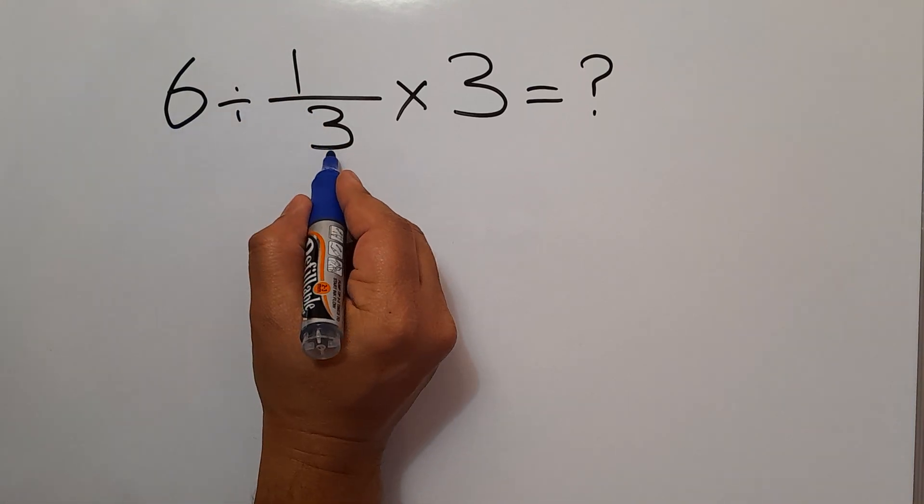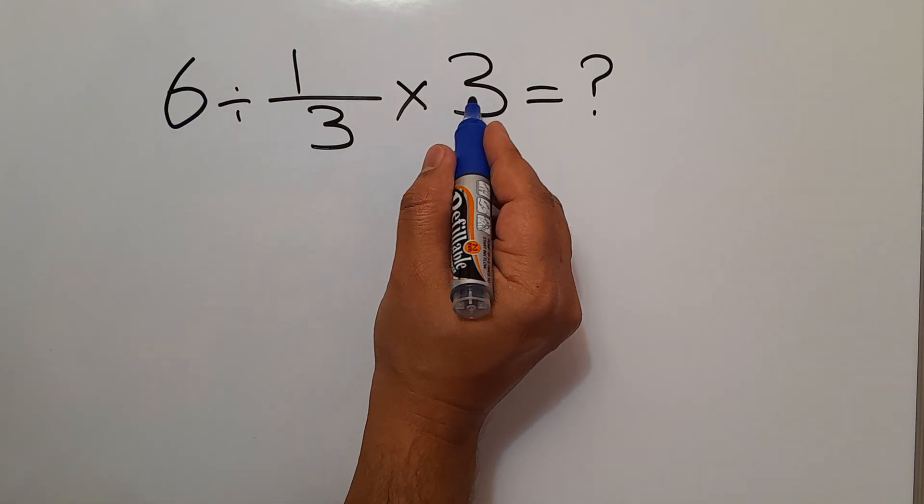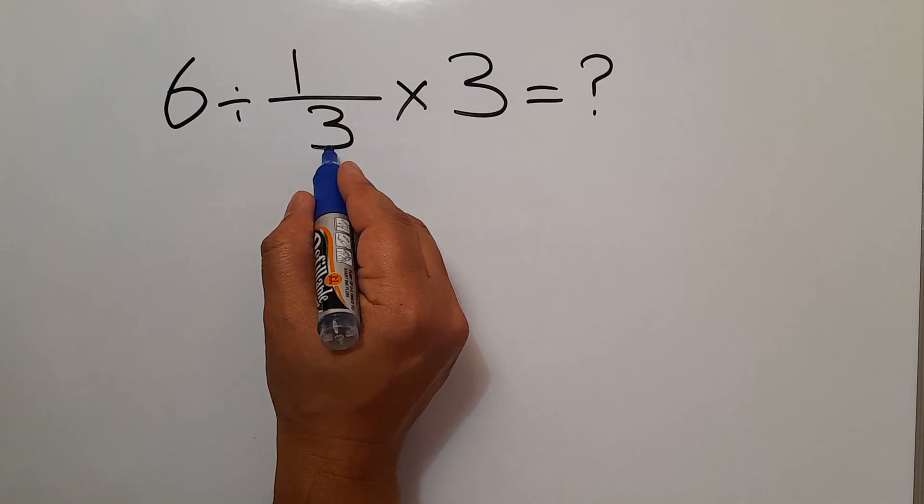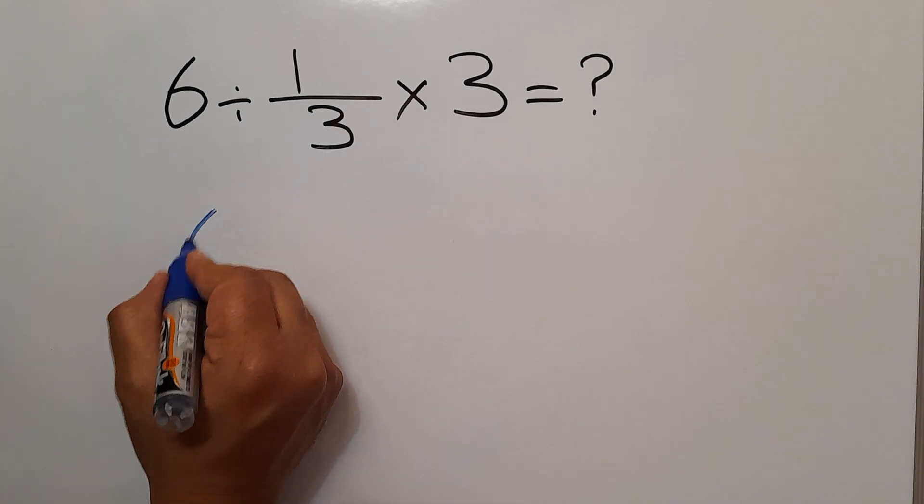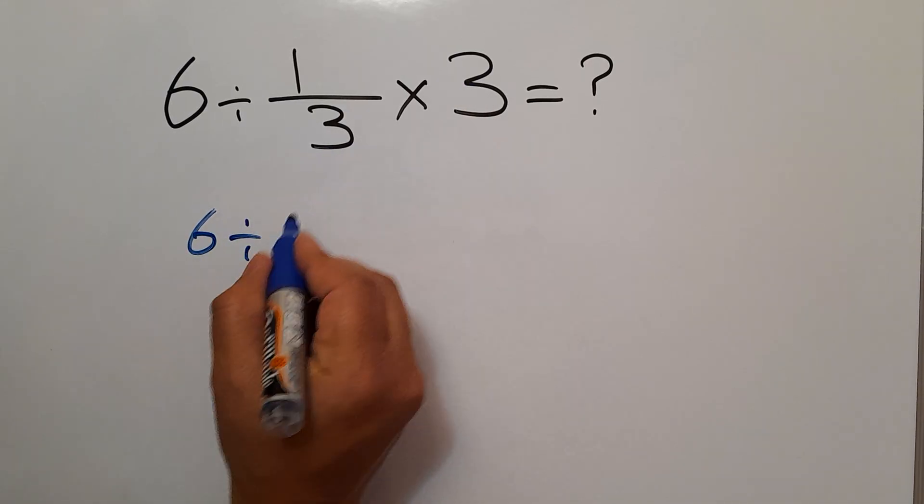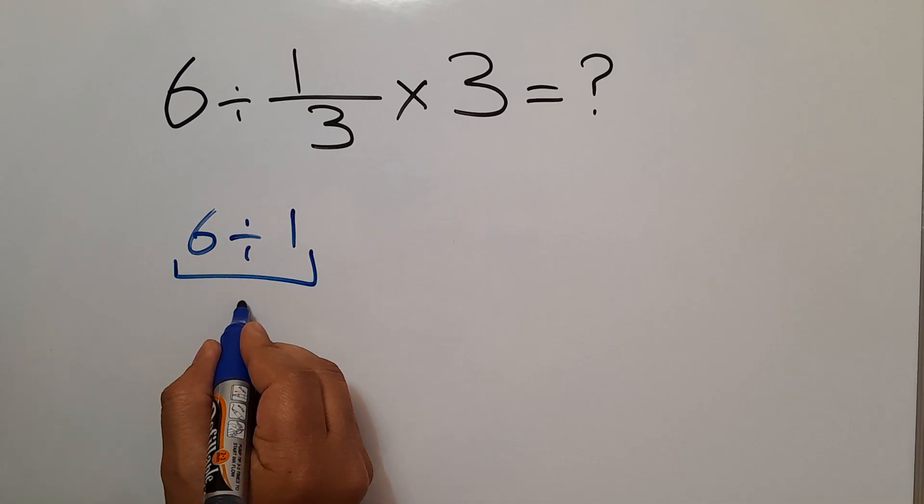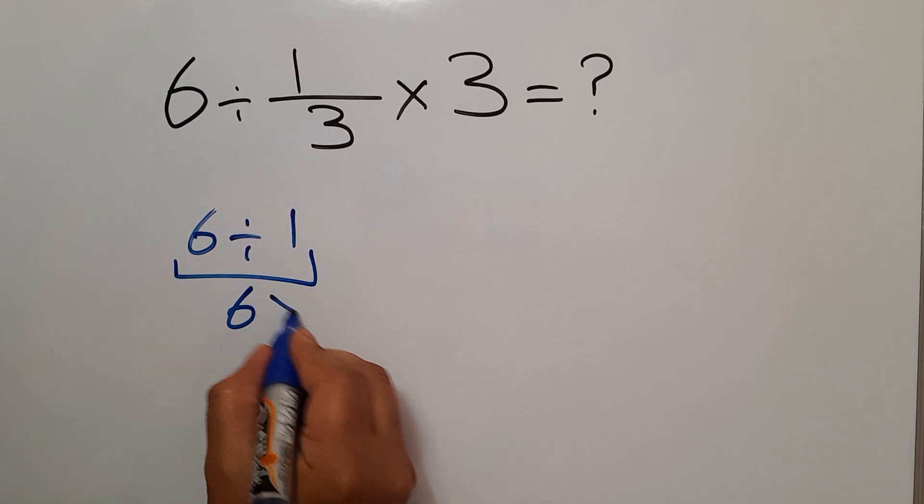6 divided by 1 over 3 then times 3. Here we can easily cancel this 3 and this 3. So 6 divided by just 1, and 6 divided by 1 equals 6. But this answer is not correct.